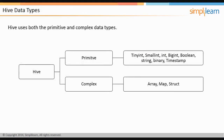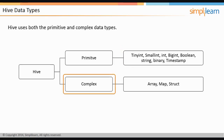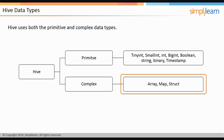Hive utilizes both primitive and complex data types. The primitive data types include tiny integer, small integer, integer, big integer, boolean, string, parallel, and timestamp. The complex data types incorporate array, map, and structures.